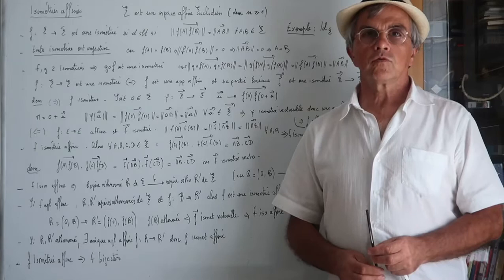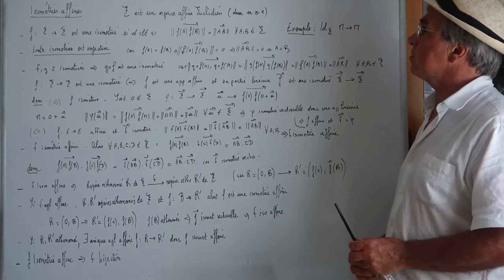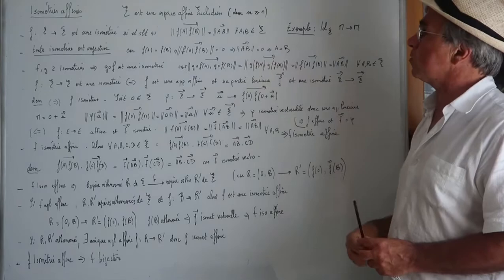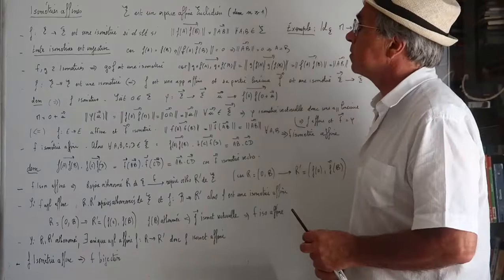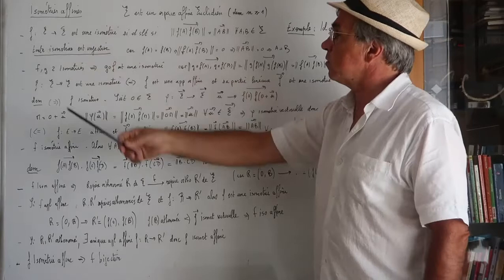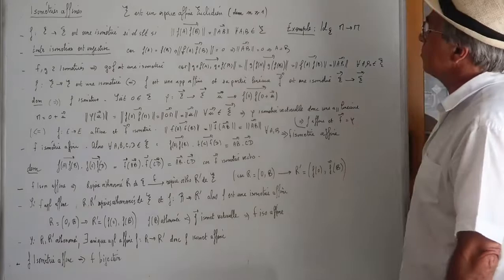Bienvenue sur les cours de Jean Phi pour un chapitre consacré aux isométries affines dans un espace affine euclidien de dimension finie, on va choisir L supérieur ou égal à 1. Par la suite on est dans un espace affine euclidien. Si F est une isométrie, F est une application de E vers E, c'est une isométrie si et seulement si la norme de F(A)F(B) est égale à la norme de AB, quels que soient les points A et B de E.